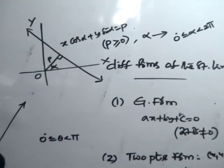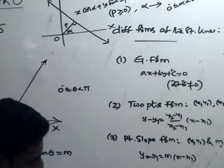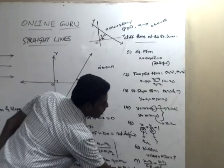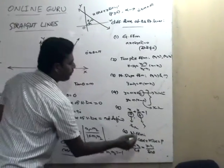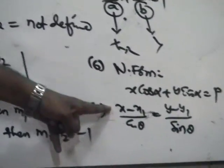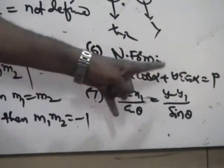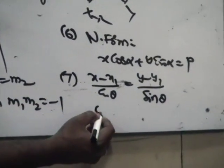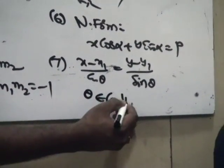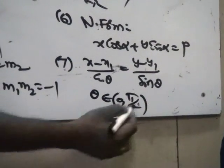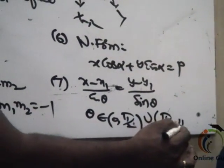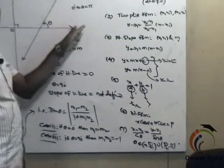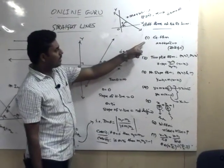The seventh form is the symmetric form of the straight line: (x - x1)/cos(theta) = (y - y1)/sin(theta). This represents the line passing through point (x1, y1) with inclination theta, where theta belongs to the open interval (0, pi/2) union (pi/2, pi).